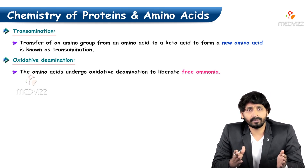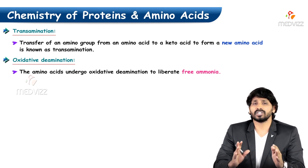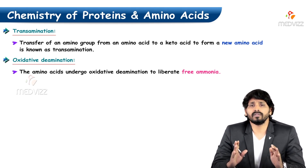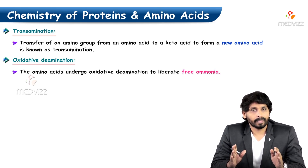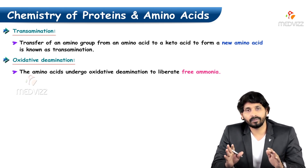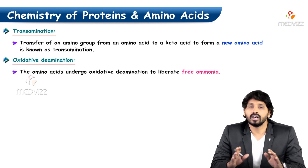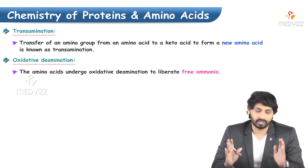Oxidative deamination takes place specifically in the liver, where free ammonia is released. In circulation, free ammonia is not allowable. Once ammonia in non-toxic form reaches the liver, an enzyme performs oxidative deamination, releasing free ammonia. This free ammonia is then involved in the formation of the urea cycle.